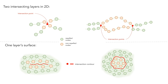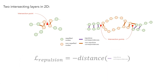Then, we find correspondences between the proximal pairs of nodes and mark them as either repulsive or non-repulsive. Together with the repulsive loss term, these correspondences allow the network to prevent intersections between the fabric layers.